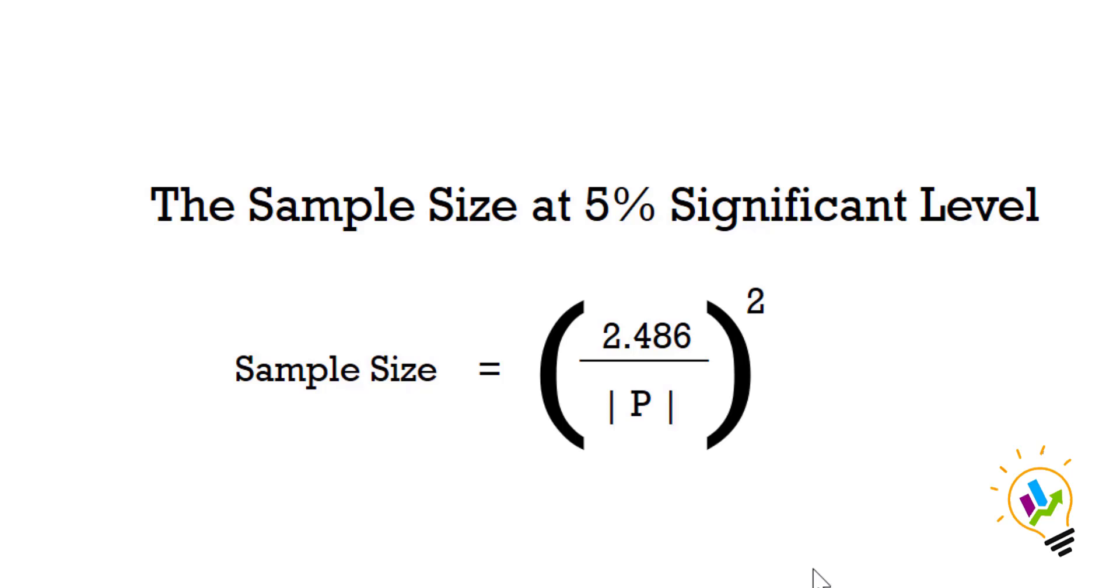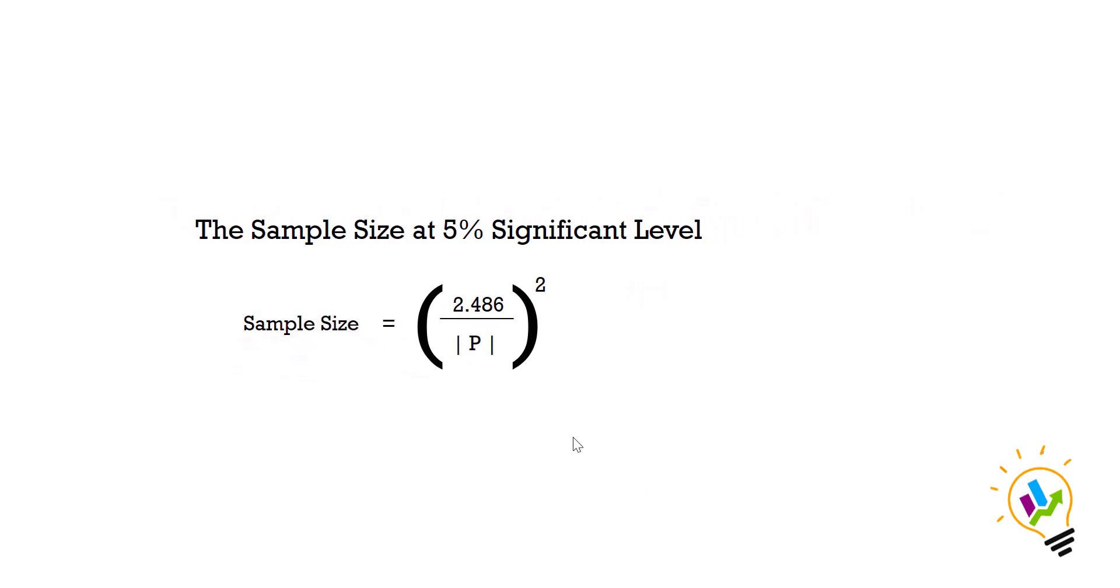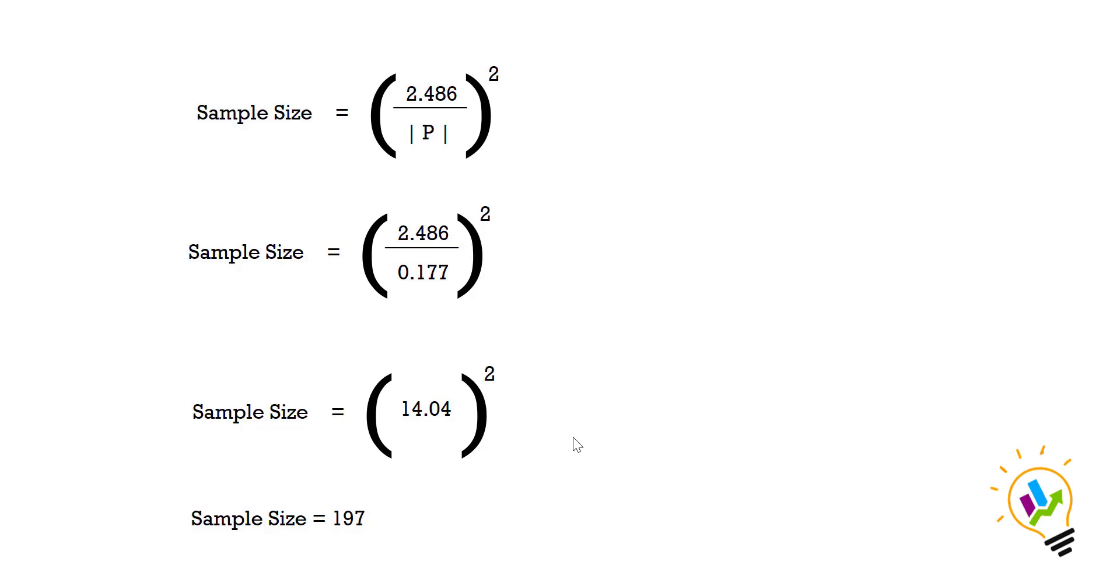The sample size equals 2.486 divided by modulus of minimum path coefficient, whole square. Modulus means we are not going to take plus or minus, only the positive value. In our example with p-value as 0.177, if we calculate that is 2.486 divided by 0.177, we get 14.04 whole square, then the sample size is 197.